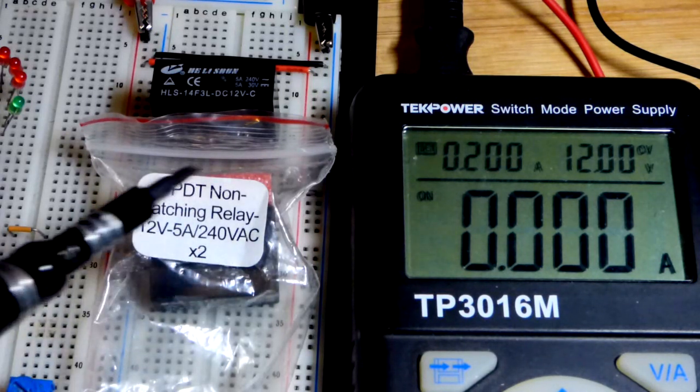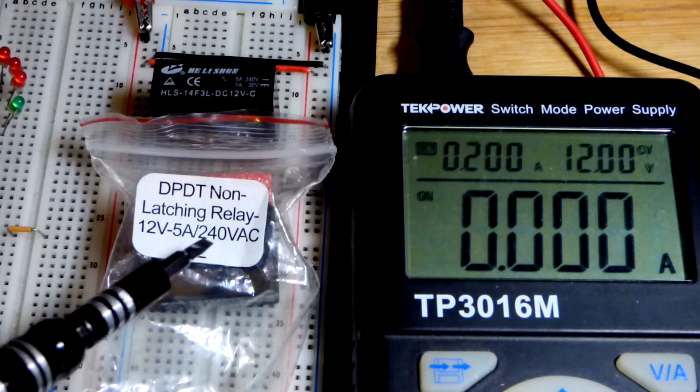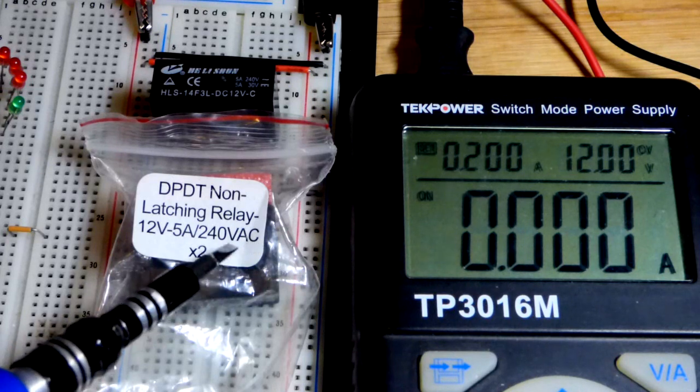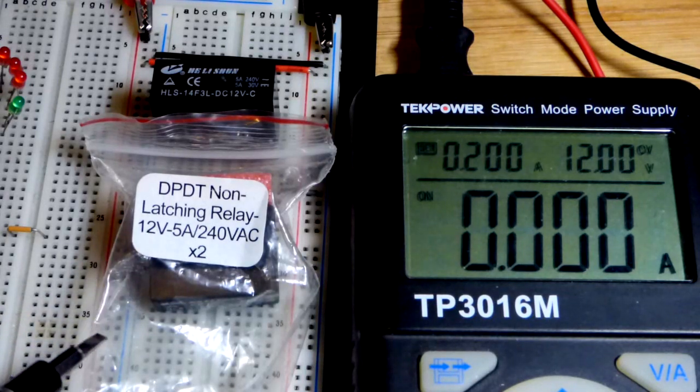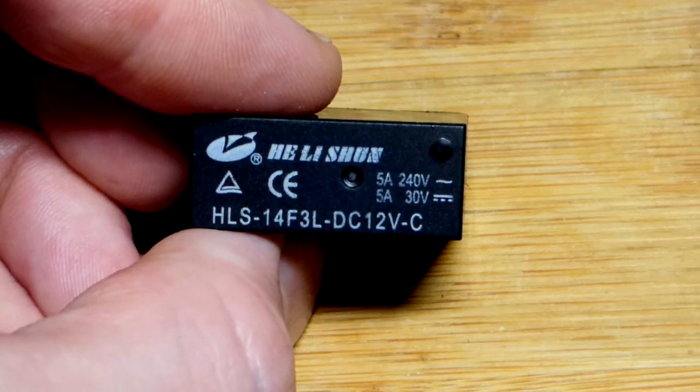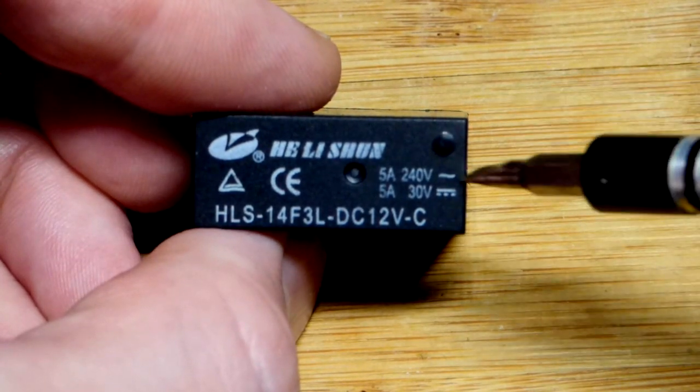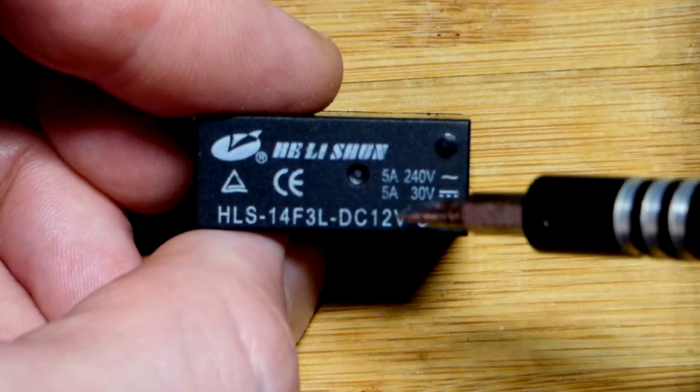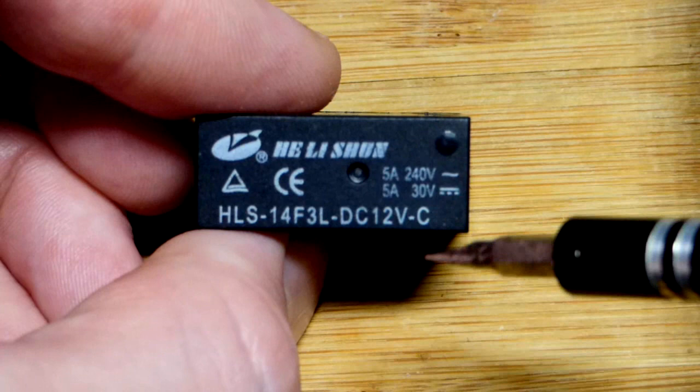In any case, the packaging on here, this came from a make electronics kit. They label them. It says you can go 240 volts alternating current. That's only alternating current, and that's dangerous. Don't do that. Up to 5 amps. 12 volts is used to switch it.